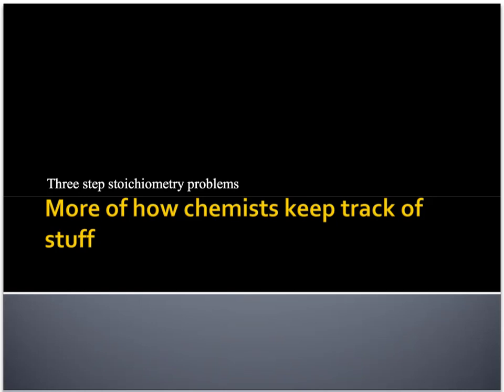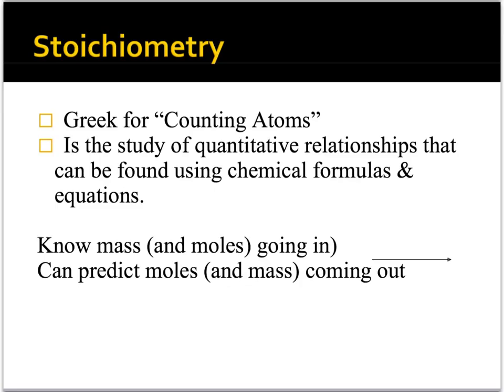What we're going to be learning about here is how to solve three-step stoichiometry problems. To quickly review: stoichiometry is the study of quantitative or numerical relationships that we can find using chemical formulas and equations.